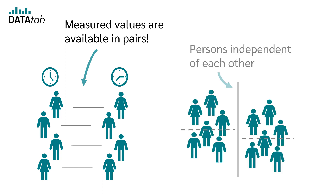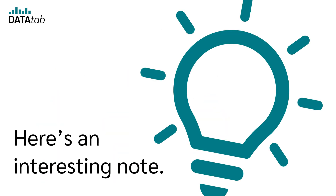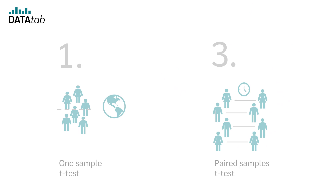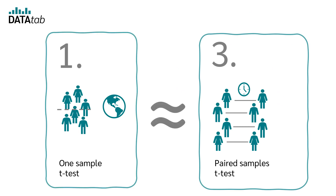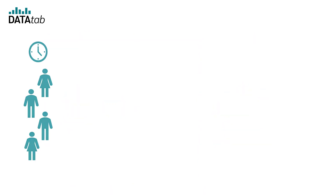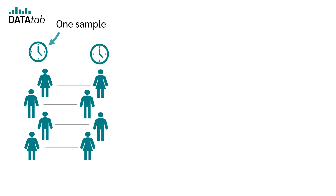Independent samples are made up of people and measurements that are independent of each other. Here is an interesting note: the paired samples t-test is very similar to the one-sample t-test. We can also think of the paired samples t-test as having one sample that was measured at two different times.